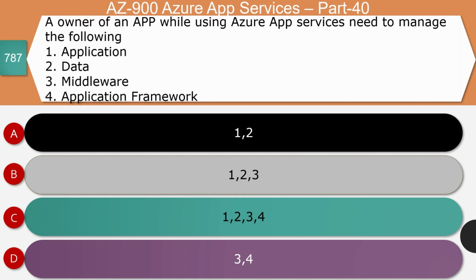Next question — an owner of an app using Azure App Services needs to manage which of the following: application data, middleware, application framework? The right answer is option A — application and data. Application and data are what the owner needs to handle. The rest, including middleware, application framework, hardware, security patches, and other infrastructure, will be taken care of by Microsoft. This is a perfect example of Platform as a Service.